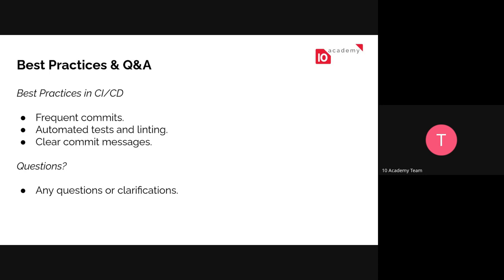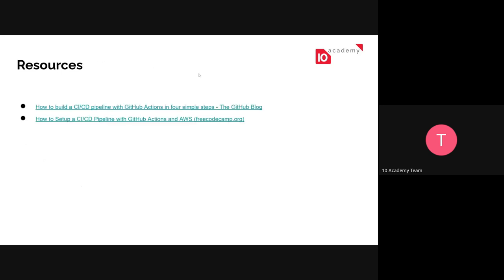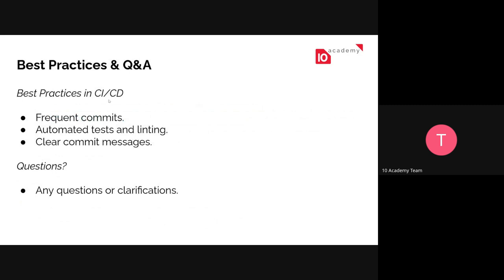Another best practice is automated tests and linting. Not everyone in a work environment has the capability to deploy or push code to the main branch. There are reviewers — your code should be reviewed before it passes to the production environment. Automated tests ensure the code passes the needed checks before going to production. Clear commit messages are also important. I'll make sure to share the slides.